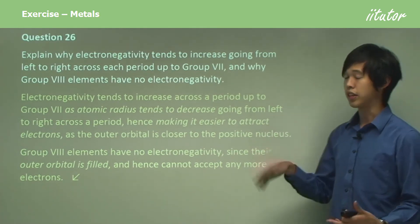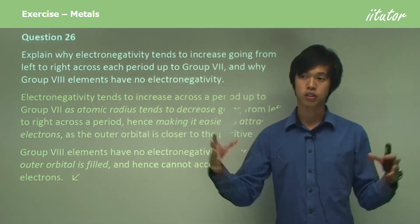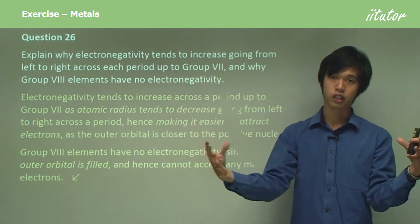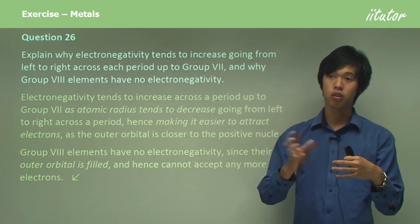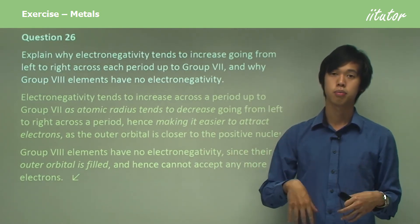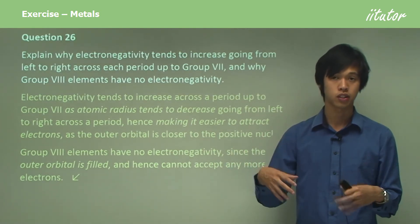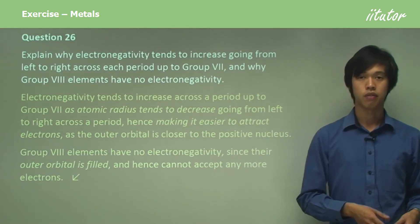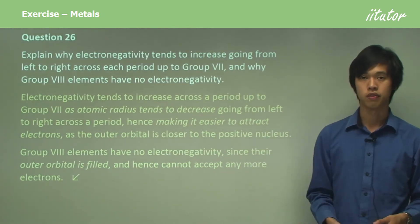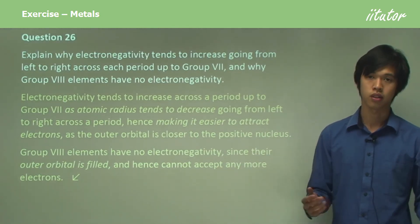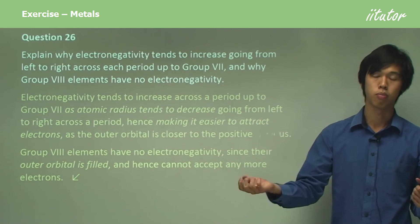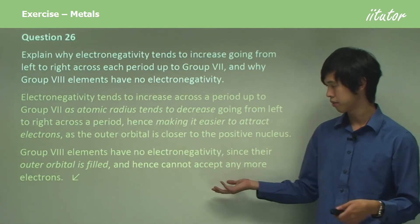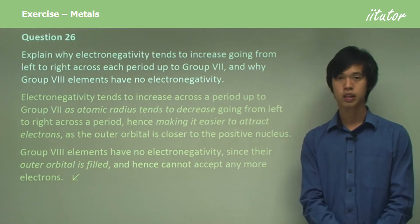So electronegativity increases because the atomic radius is shrinking, making it easier to hold onto the electrons because the force of attraction is stronger. And Group 8 have no electronegativity because they can't form any bonds, so they can't attract a bonding pair of electrons.